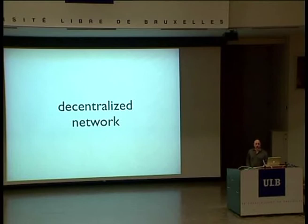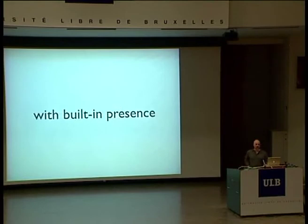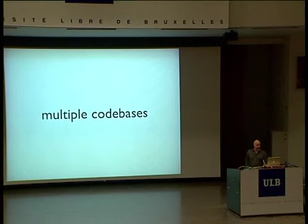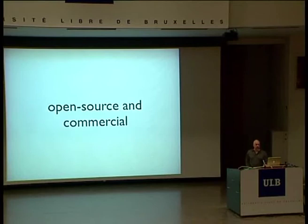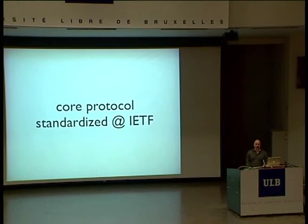We have a client-server architecture, which enables us to build a decentralized network for inter-domain messaging. It's basically like email, but really fast, with built-in presence. But it's not an open source project. Jabber's different from something like Apache or Linux. Multiple code bases — open source code, commercial code, shareware, freeware — all sorts of different kinds. Because we really focus on the protocol, not the code base.